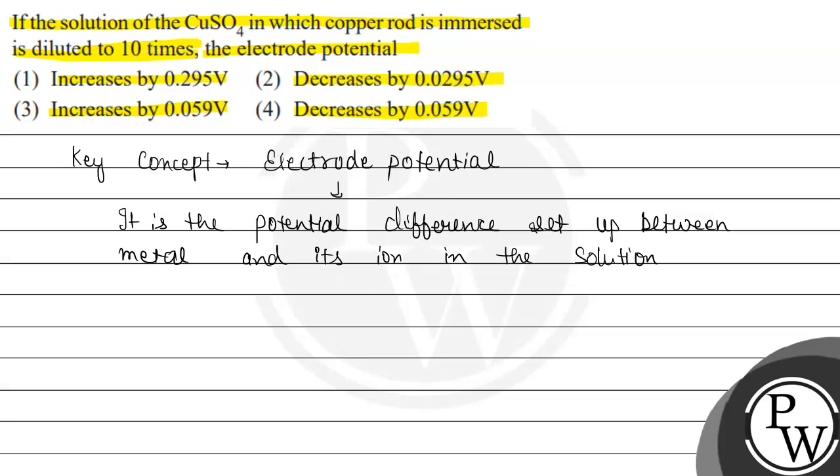According to the question, copper rod is immersed in copper sulfate solution and the reaction on the copper will be Cu²⁺ that will gain 2 electrons which will lead to the formation of copper. And it is said that we dilute it 10 times. First of all we will write the Nernst equation.